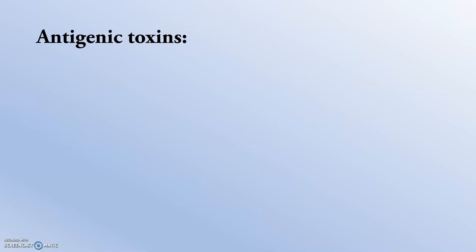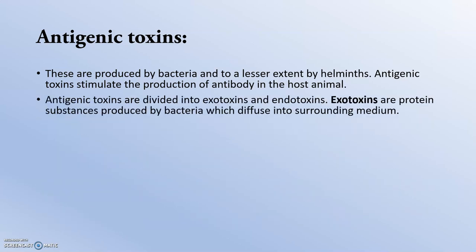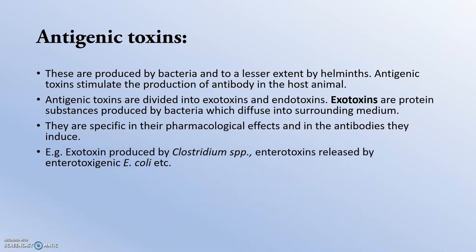Antigenic toxins are produced by bacteria and to a lesser extent by helminths. They stimulate the production of antibody in the host animal — they have the name 'antigen' because they generate antibodies. Antigenic toxins are divided mainly into exotoxins and endotoxins. Exotoxins are proteinaceous substances produced by bacteria which diffuse into the surrounding medium, producing lesions and symptoms. They are specific in their pharmacological effects and the antibodies they induce. Examples include the exotoxin produced by Clostridium species and the enterotoxins released by enterotoxigenic E. coli.